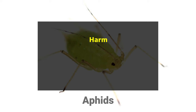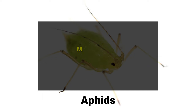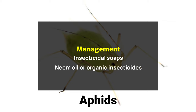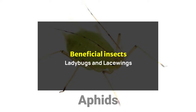Aphids harm: aphids can suck sap from safflower plants, leading to stunted growth, yellowing of leaves, and reduced yield. Management: aphids can be managed by using insecticidal soaps, neem oil, or other organic insecticides. Beneficial insects like ladybugs and lacewings can also help control aphid populations.